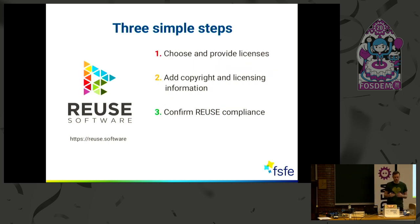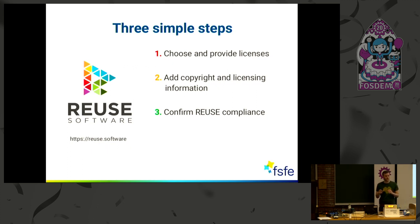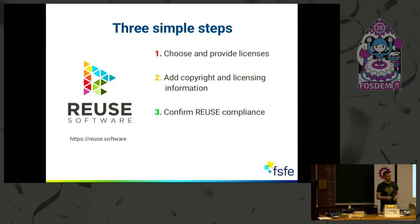We came up with best practices for free software developers to make licensing easy and transparent for everyone. There are three steps. The first is: choose and provide licenses — make a conscious decision about which license to choose and store the full license text inside your repo. The second is: add copyright and licensing information to every file, either as a comment header or via alternative methods for binary files. The third step is: confirm ReUse compliance using the ReUse helper tool, which checks your repository and verifies whether you have this information available for every file. If that's done, you get a big fat smiley.